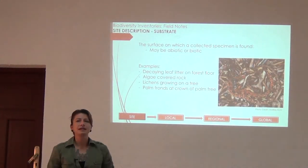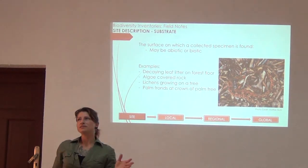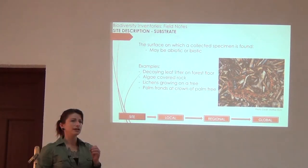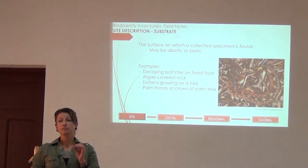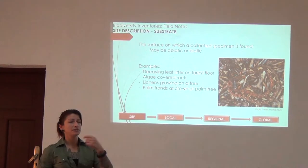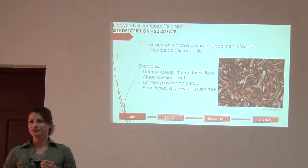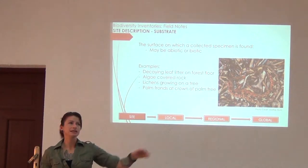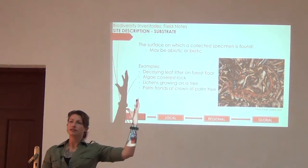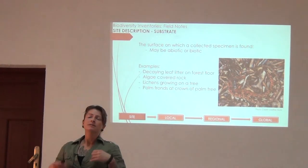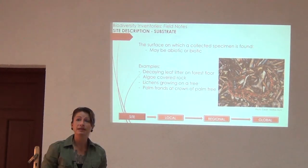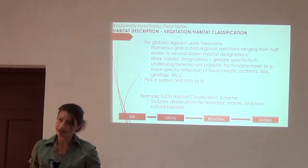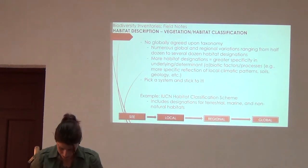Moving on to site description. You have a little more freedom to get creative with descriptions, but this is definitely where you want to start getting incredibly explicit and standardizing precisely how you describe things. You've heard the herpers talk about substrate — 'I found this frog on a moss-covered rock' or 'we found this bird specimen sitting on a branch two to three inches in diameter of this type of tree.' Specifically state precisely where that animal or plant was at the time of collection.